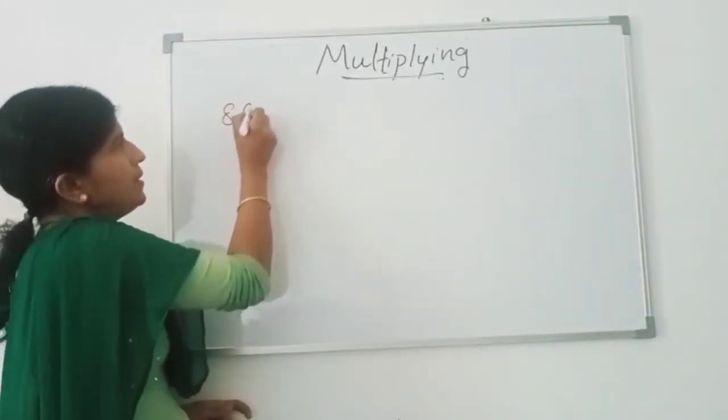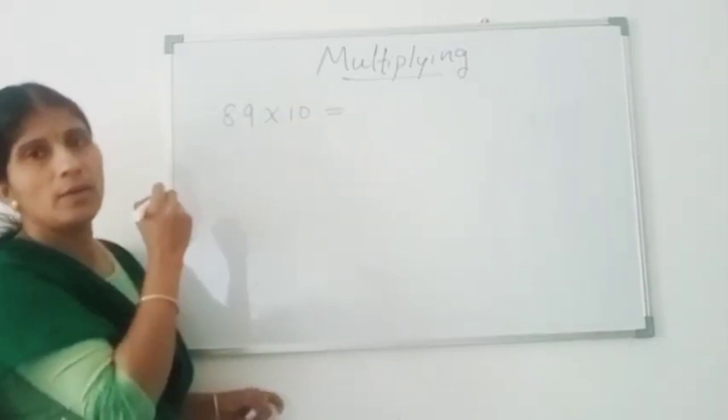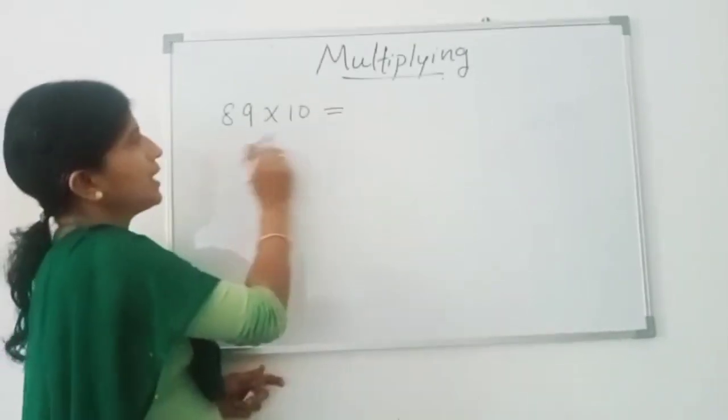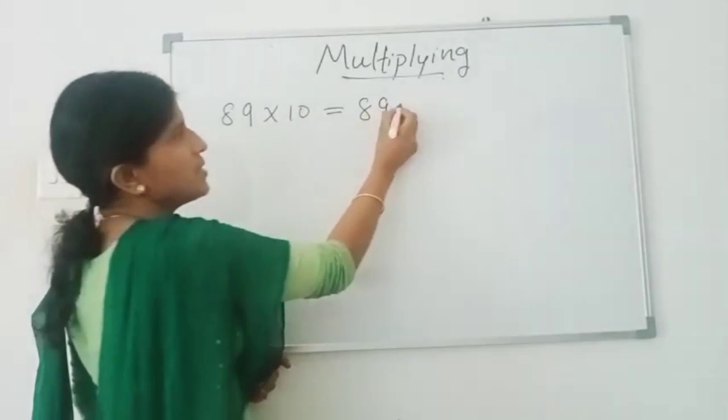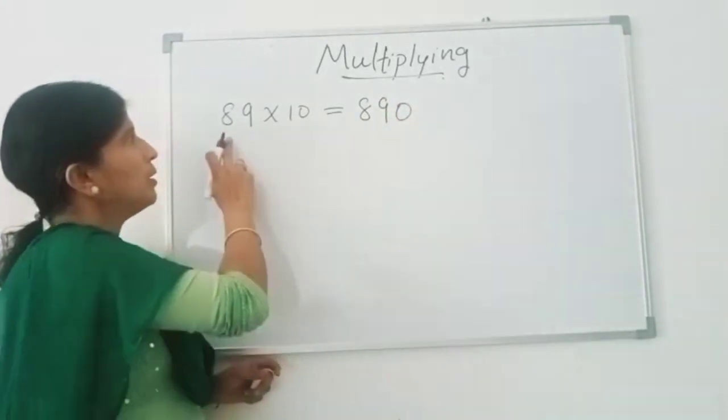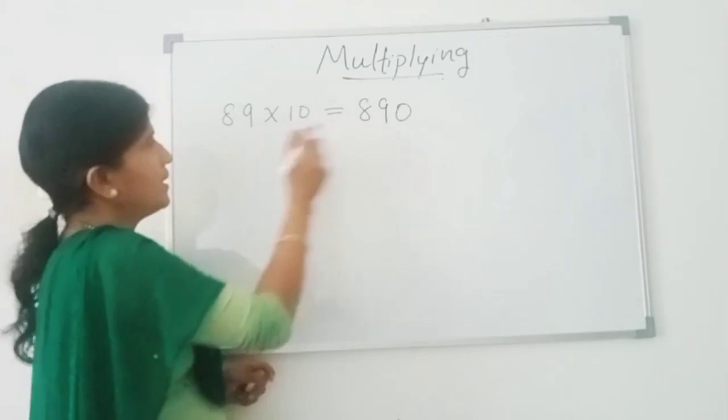89 times 10. Children, what do we want to do? We can just write 89 here and we can add this 0. So, 89 times 10 is 890.